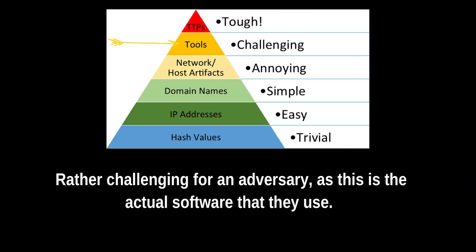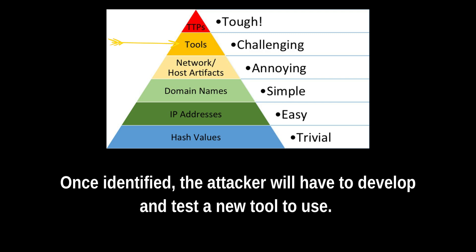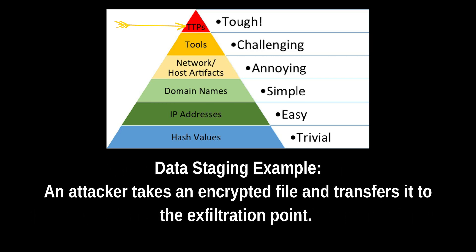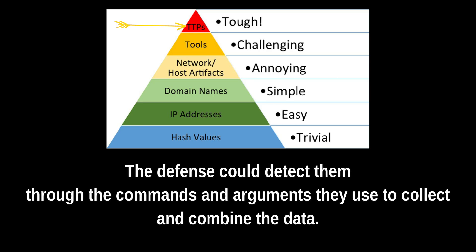Next is tools, which are particularly challenging for an adversary. This is the actual software that an adversary will use. Think about a tool for a botnet on a system — one way you could identify this is through changes to system settings required for the tool to operate, an unusual process, or an indicator of a keep-alive packet, which is a way to maintain a connection between two hosts. Once identified and stopped, the attacker will have to develop a new tool, which is a pretty big headache. The last and hardest thing for an adversary to change are the TTPs. This refers to the training of the adversary and their personal behaviors, such as the commands they run within their own procedures. An example is data staging — when an attacker takes an encrypted file and transfers it to the exfiltration point. The defense could detect them through the commands and arguments they use to collect and combine the data.